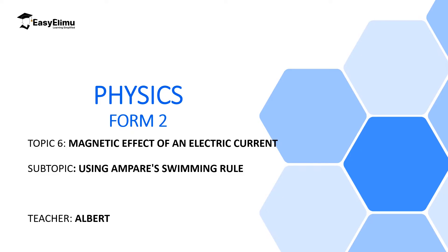Welcome to ECLIMU Learning Simplified and welcome to this lesson. In the previous lesson, we defined Ampere's swimming rule, which states that if one imagines swimming along a wire in the direction of the current and facing the compass needle, then the north pole of the needle will be deflected towards the swimmer's left hand. In this lesson, we are going to discuss how to use Ampere's swimming rule to determine the direction of magnetic field along a conductor carrying current.